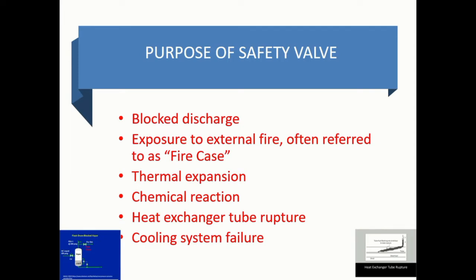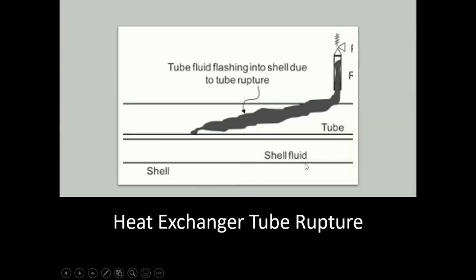Other causes include thermal reactions, chemical reactions, and heat exchanger tube ruptures. In the internal structure of a heat exchanger — shell and tube construction — fluid flows either in the same or counter-current direction to exchange heat. If a tube rupture takes place, the fluid flashes and increases the pressure inside. So if a pressure safety valve is already used there, once you use the pressure valve, the excess overpressure from the rupture can be released easily into the atmosphere.